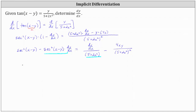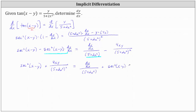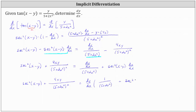This gives us secant squared of the quantity x minus y plus 4xy divided by the square of the quantity 5 plus 2x squared, equals on the right dy/dx divided by one factor of 5 plus 2x squared plus secant squared of the quantity x minus y times dy/dx. For the next step, we factor out dy/dx from the right side, giving us dy/dx times the quantity one divided by 5 plus 2x squared plus secant squared of the quantity x minus y.